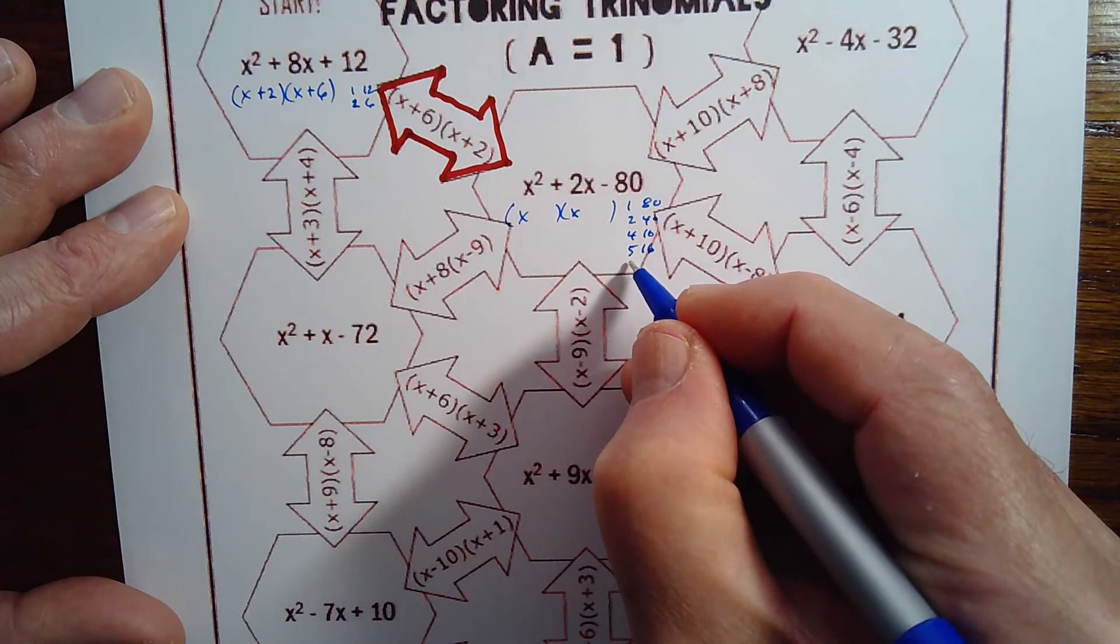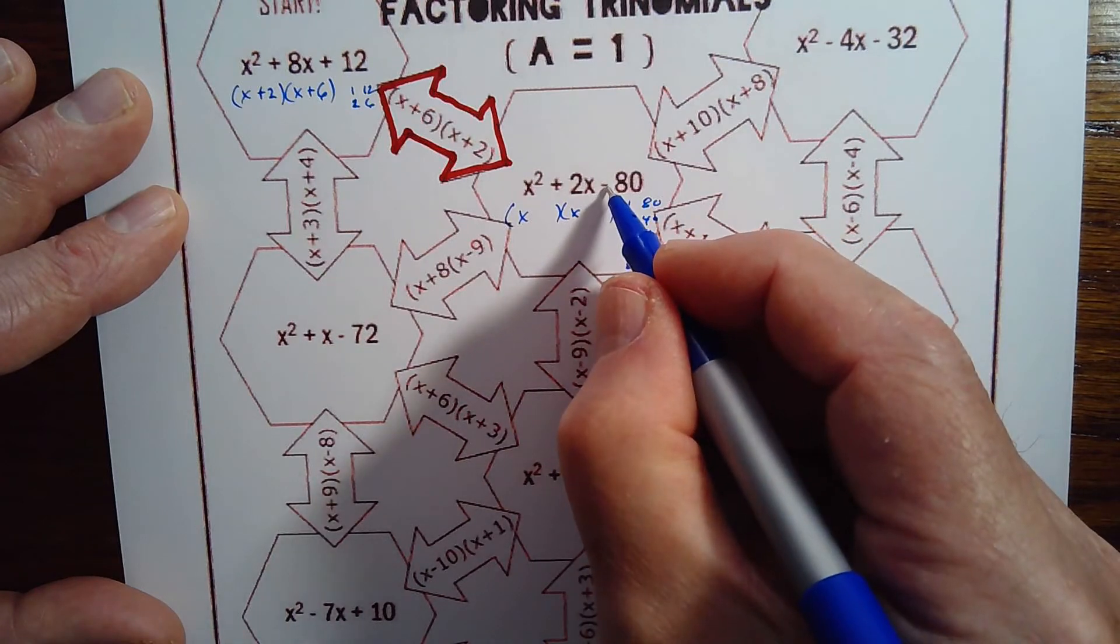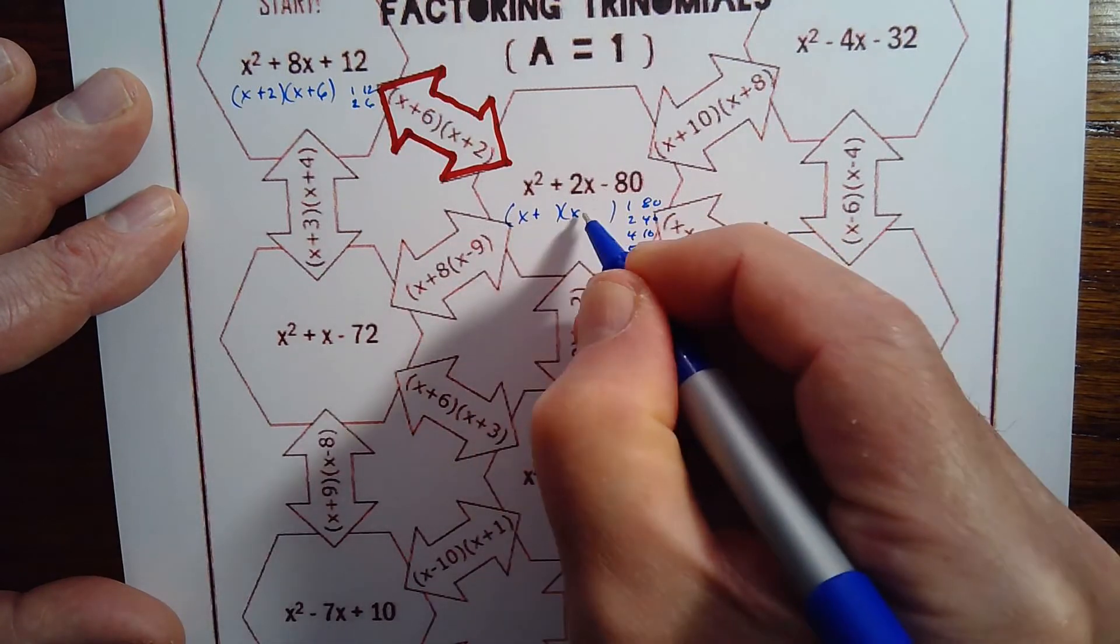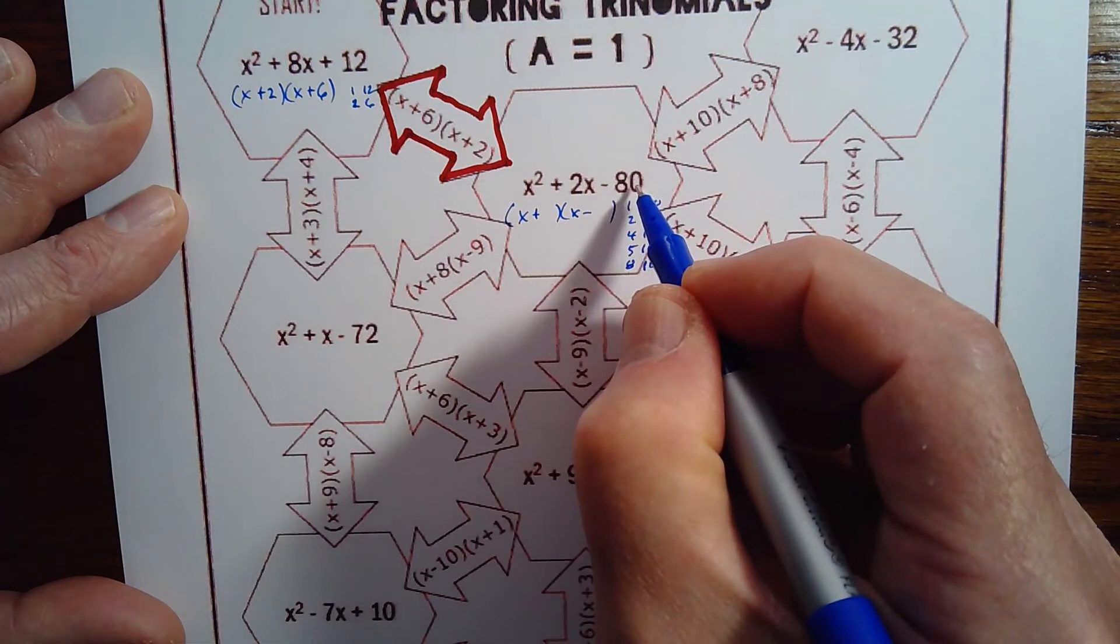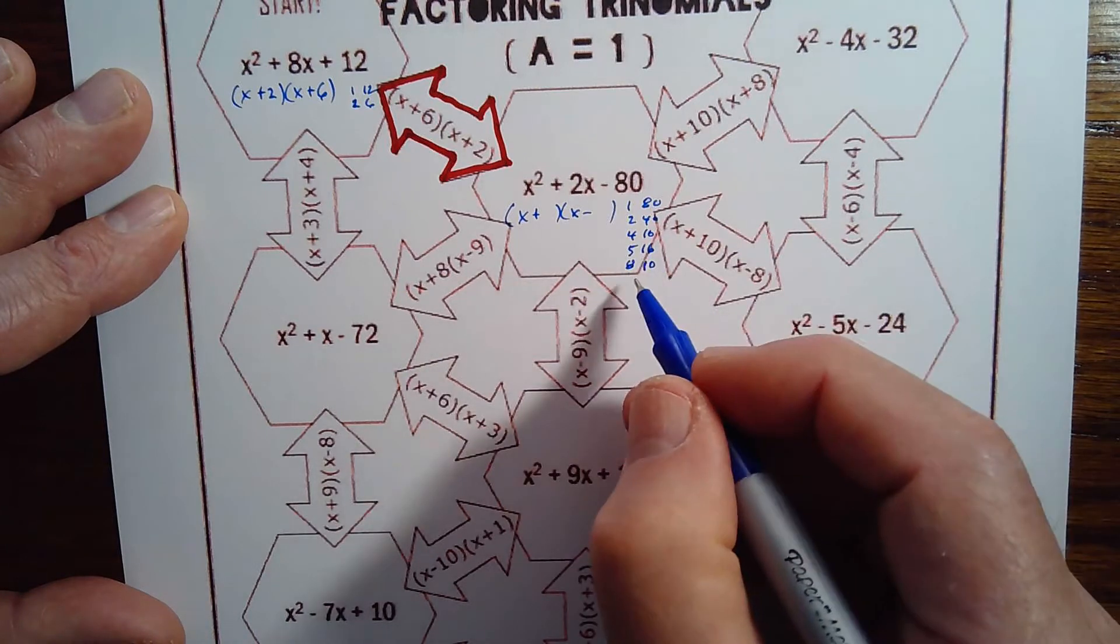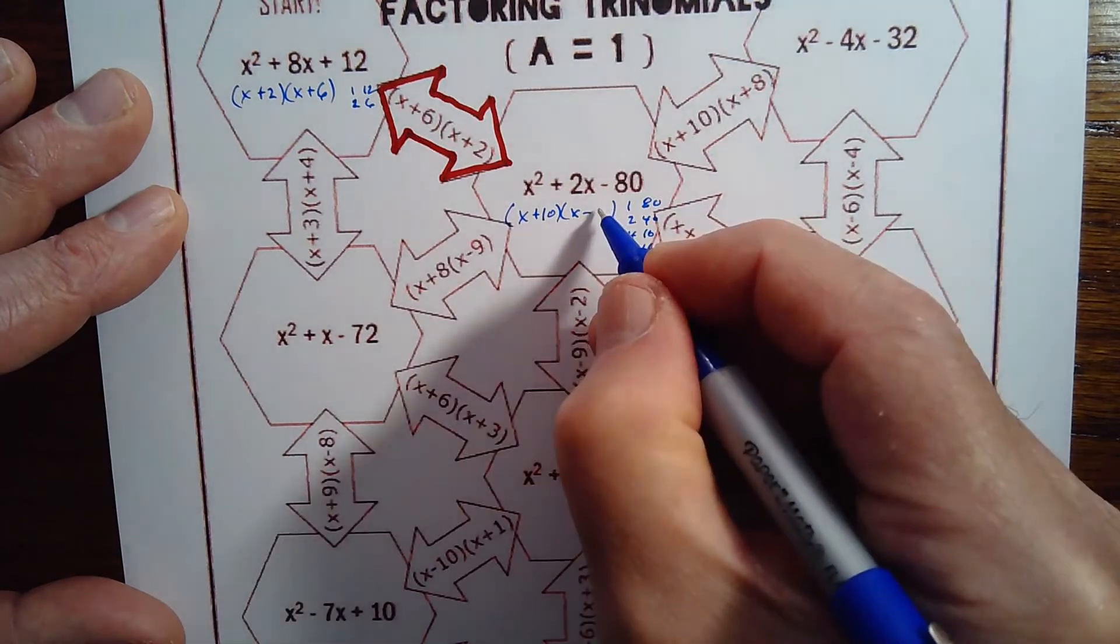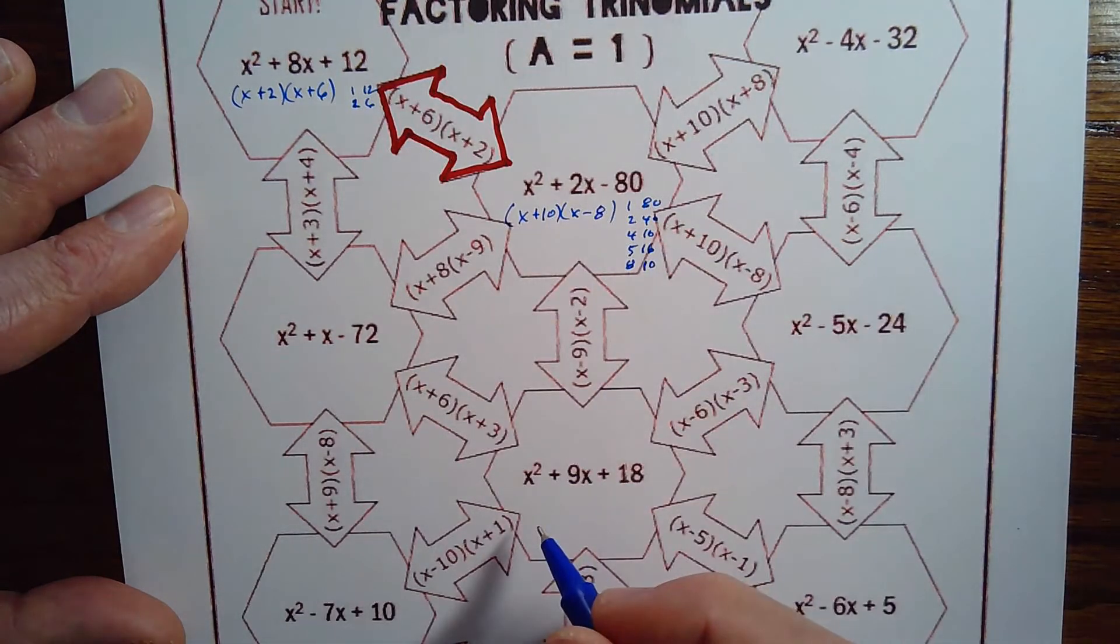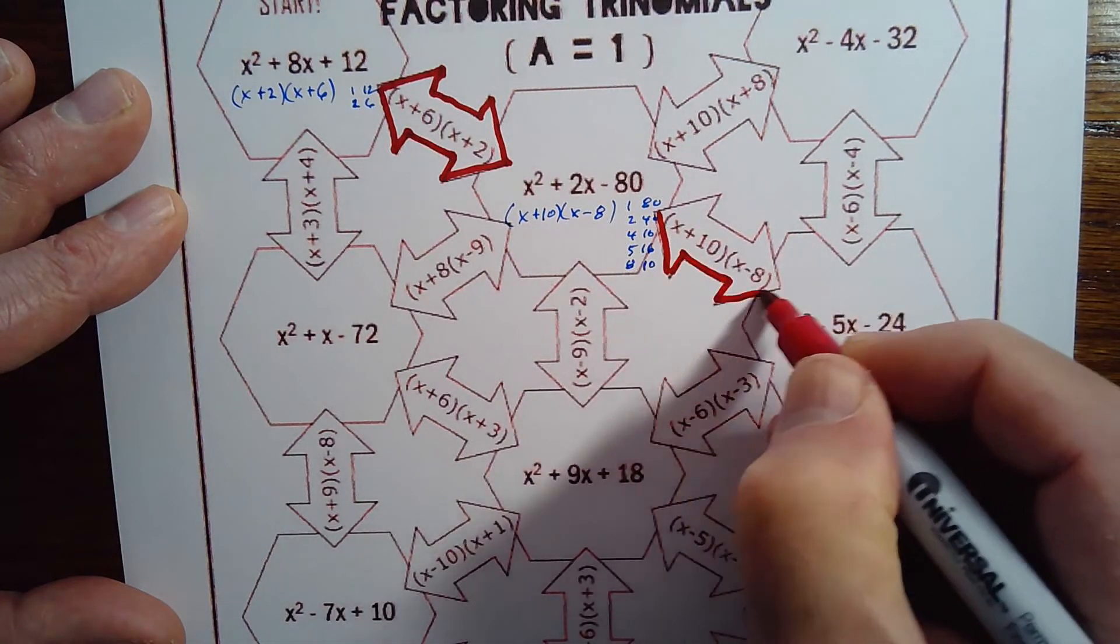8 and 10, yeah. So it's a minus sign here, that tells me there's one of each sign. So I have to be a positive times a negative to get a negative 80. And then I got positive 2x for my middle term. That means I'm going to need more positive, so that means the 10 goes with the plus sign and the 8 goes with that minus sign. And so it looks like we're heading diagonally down here.